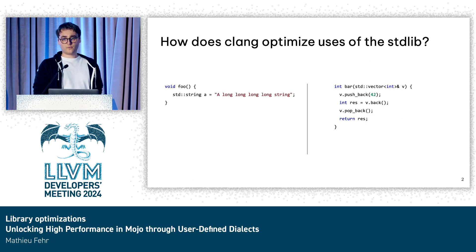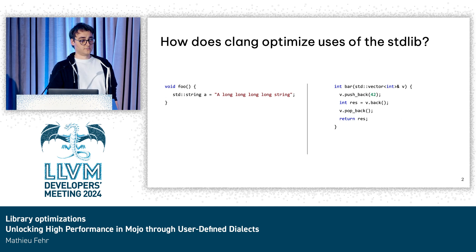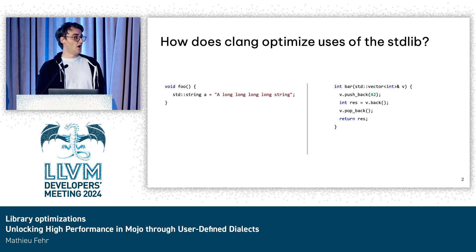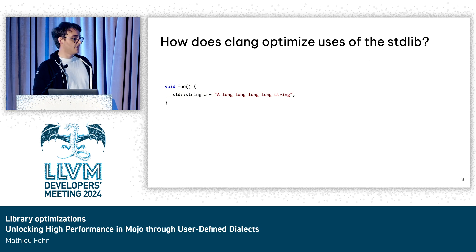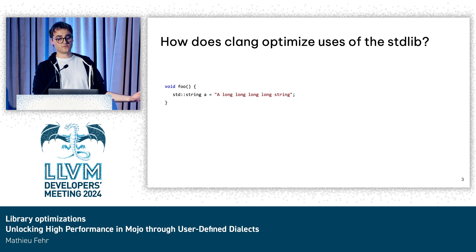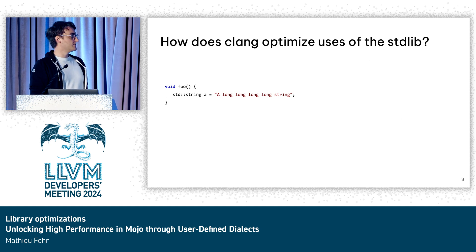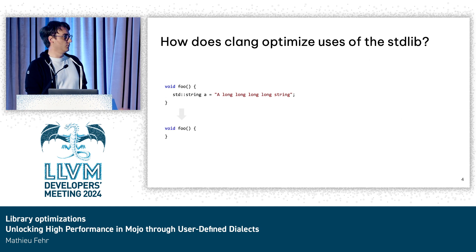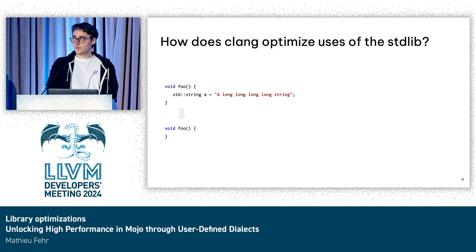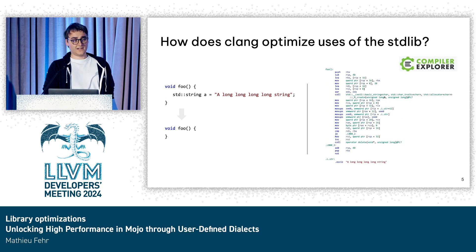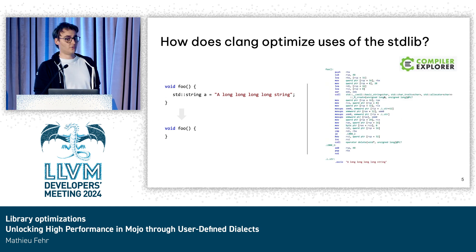Before going there, we probably want to see what the actual problem is. Let's look at two examples of C++ code and see how Clang currently optimizes them. If we take the first example, we just have a function that creates a string and doesn't do anything with it. The string is long enough that it doesn't trigger small string optimization, and what you might expect Clang to do is to just remove it, because it's unused. But if you ask our best friend Godbolt, it actually does not — and that might be surprising to some of you.